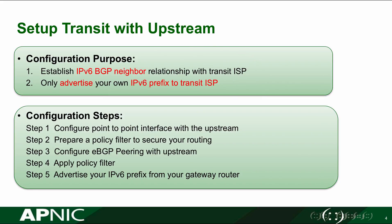Now let's look at the configuration steps from Step 1 to Step 5. In Step 1, we'll configure the point-to-point interface that connects your BGP router to your upstream BGP router. Step 2, we build a policy filter specifying what prefixes are advertised to the internet. Step 3, we configure the eBGP configuration with the upstream or peer. Step 4, we apply the filter from Step 2 to the neighbor configured in BGP. Step 5, we advertise our IPv6 prefix from the gateway to the internet.